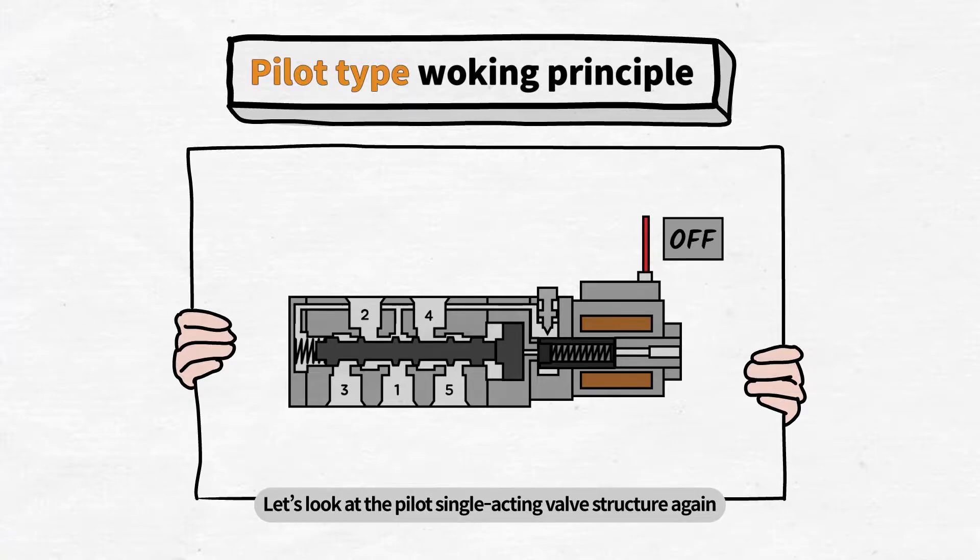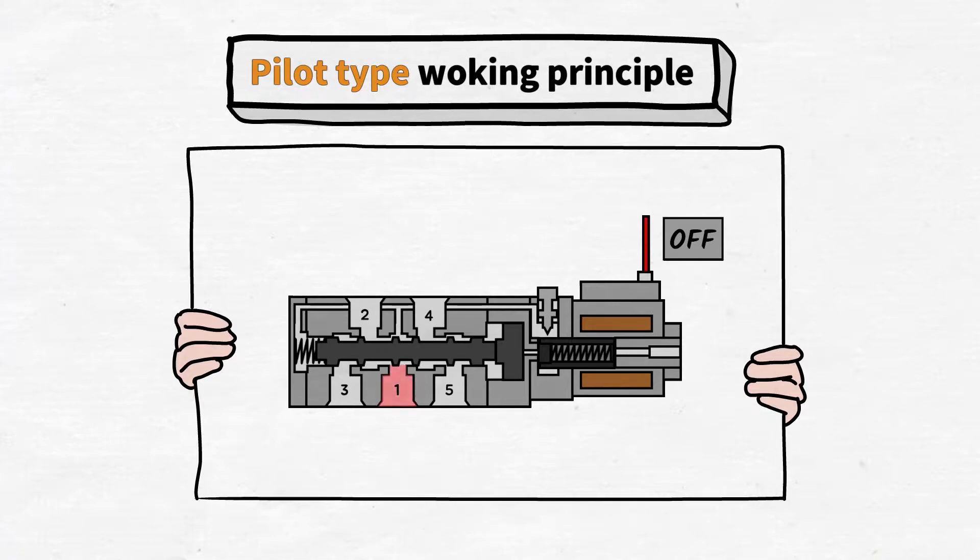Let's look at the pilot single acting valve structure again. No current is flowing in the solenoid coil right now. In this state, we will supply compressed air through supply port 1. Then the compressed air comes into port 1 and goes out of port 2.